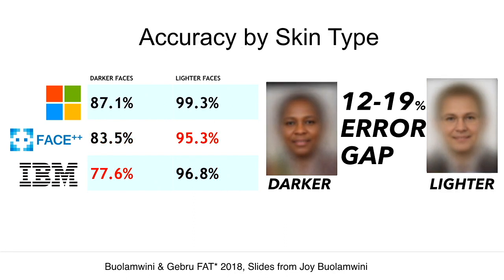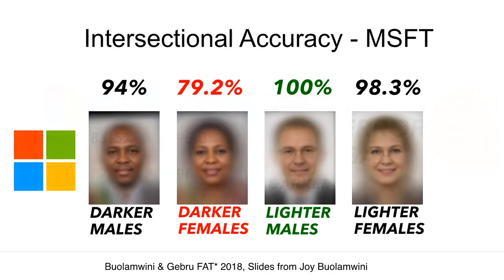When you break them down by skin type, you can see the accuracy gets lower for darker versus lighter-skinned people. And then when you look at the intersectional accuracy — breaking it down by gender and skin type — that's when you see the highest disparity in error rates.